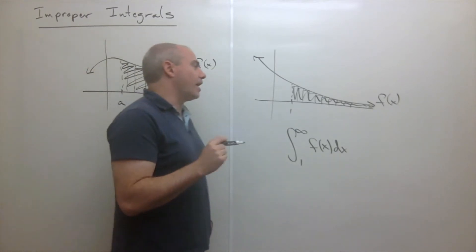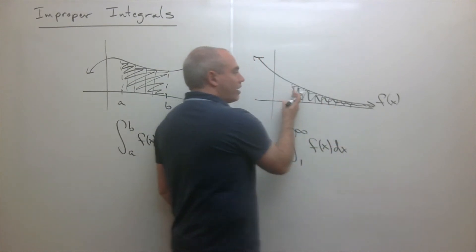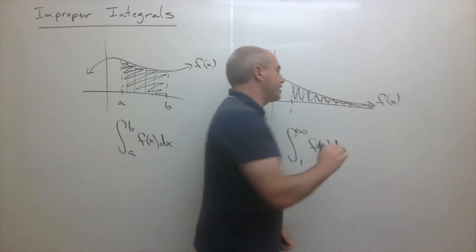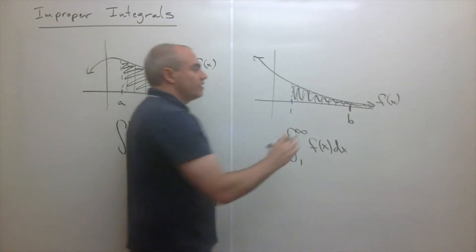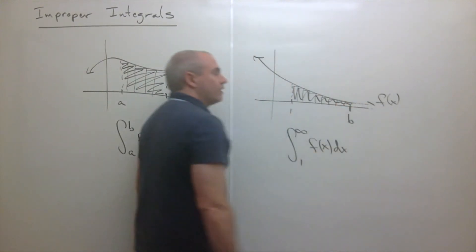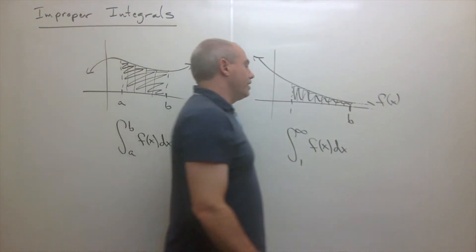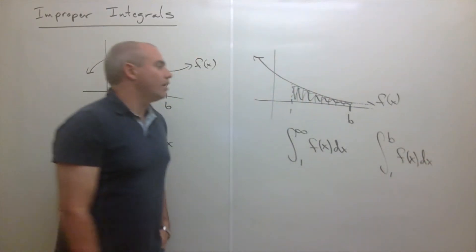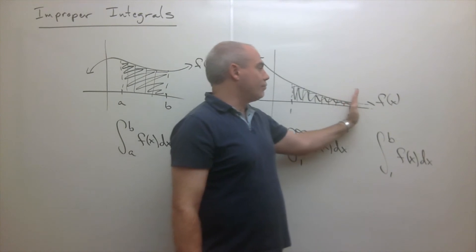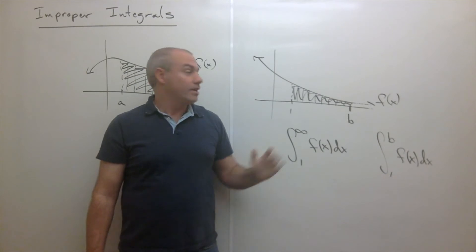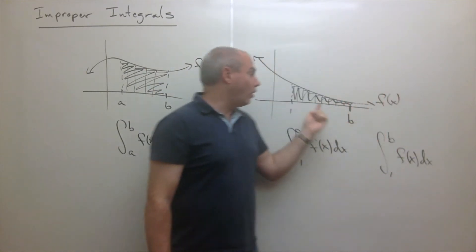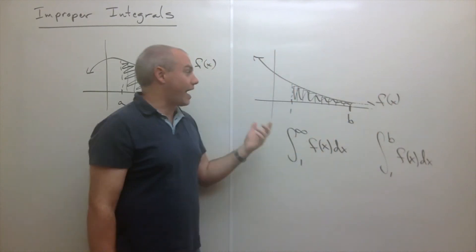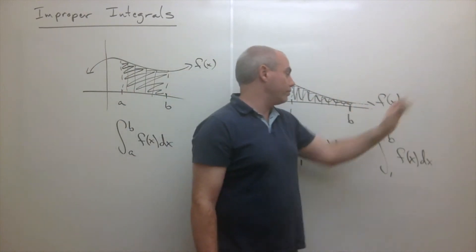Instead, we'll be clever and say: instead of adding up all the area from 1 to infinity, what if we just stopped somewhere? We add up all the area from 1 to some point b, and then stop at b. What we could do is take the integral from 1 to b of f of x dx, and then start moving b toward infinity. As b moves, we get closer and closer to our actual answer — and we're always adding up a finite number of rectangles.